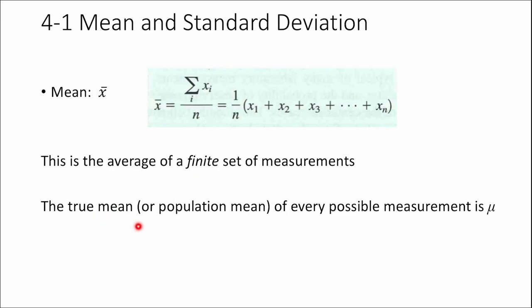The true mean, which we also call the population mean, would be if you did every single measurement possible in the universe, you would get mu, which is your true mean. We never actually get the true mean. We can get really close, but we never actually hit it.